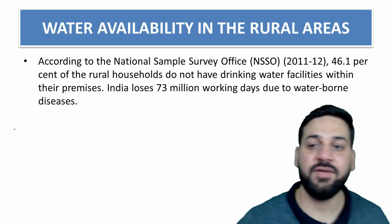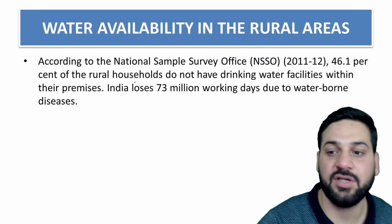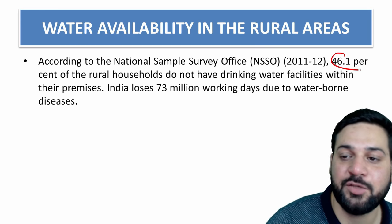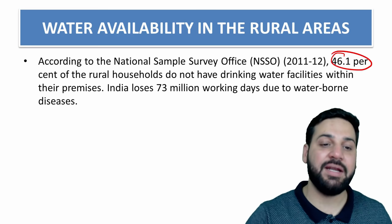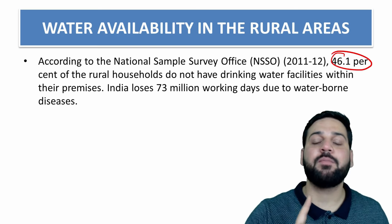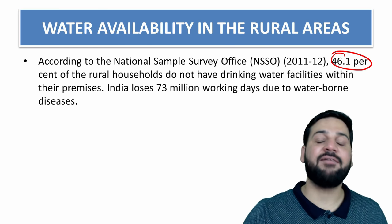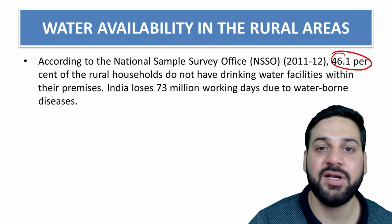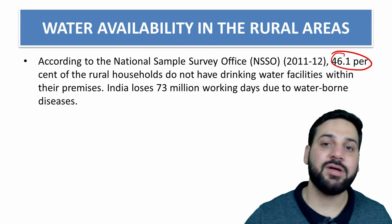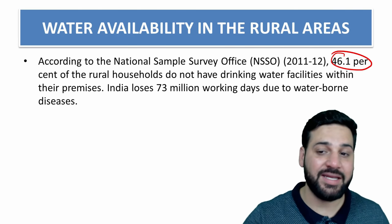Regarding water availability in rural India, according to the National Sample Survey, 46.1% of rural households in India do not have drinking water facility in their own premises — they need to go out and fetch water.